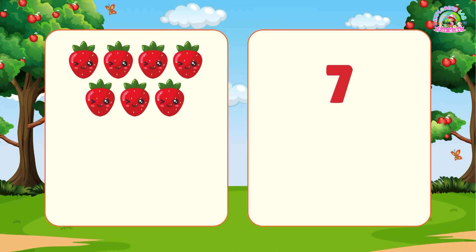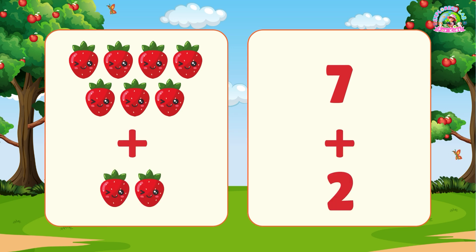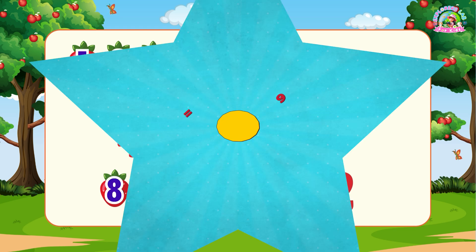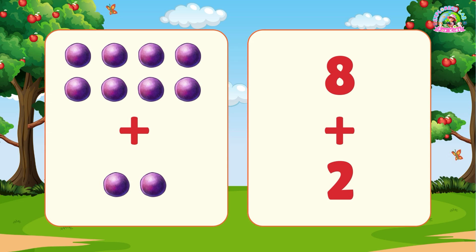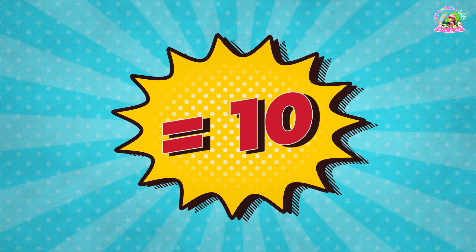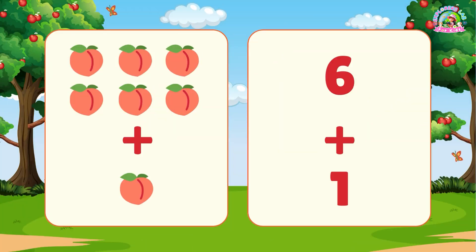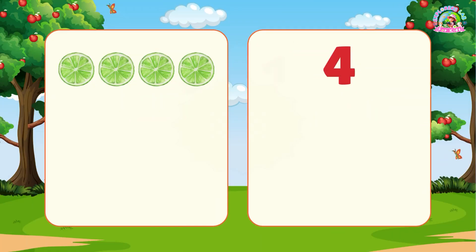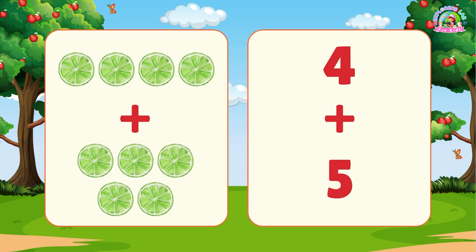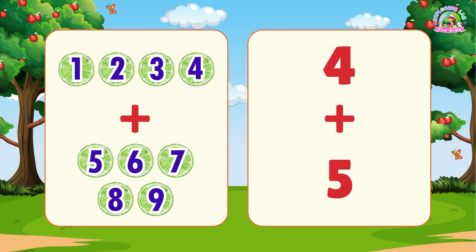There are seven strawberries in a bowl and I add two more. How many strawberries do I have now? Nine. I put eight grapes on a plate and then add two more. How many grapes are on the plate? Ten. I have six peaches and add one more to my basket. How many peaches are there now? Seven. There are four limes in a bowl. If I add five more, how many limes are there in total? Nine.